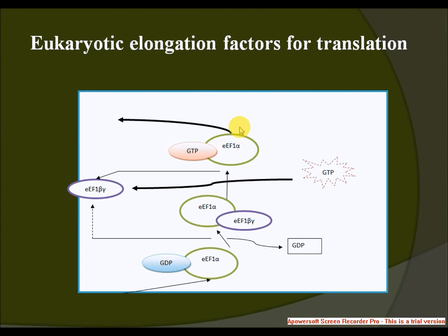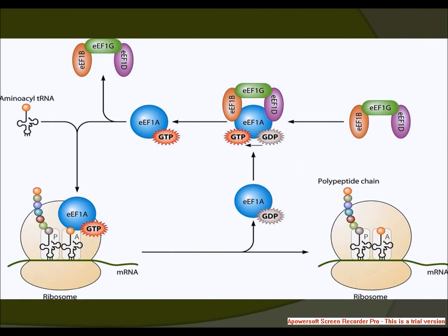In this picture, eEF1-alpha is shown as the counterpart of prokaryotic EF-Tu, and eEF1-beta-gamma acts as the counterpart to prokaryotic EF-Ts, serving as the guanine nucleotide exchange factor for alpha. The eEF2 elongation factor is also shown, and eEF1A, 1B, and 1D denote the alpha, beta, and gamma subunits respectively. Thank you — I hope this lecture is helpful to you.